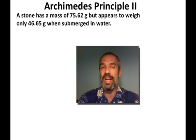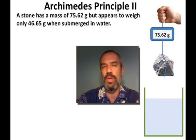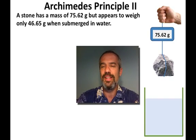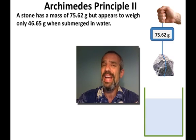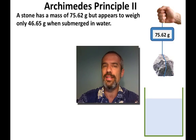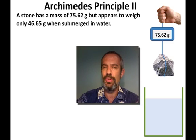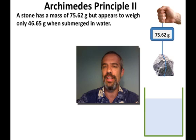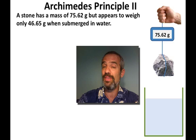Now we're going to solve these one at a time, but before we do, let's make sure we have a visual on this. Here I have the stone — notice how it has a mass of 75.62 grams. In this video we're going to use mass and weight interchangeably. I know weight is a force and should be measured in newtons, but it'll make it a little bit more convenient. So there's the stone hanging there at 75.62 grams — we're going to take that to be the real mass of it.